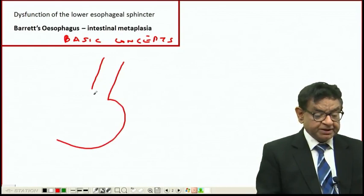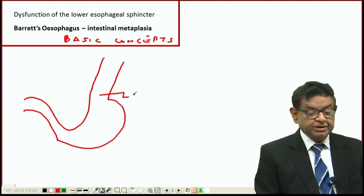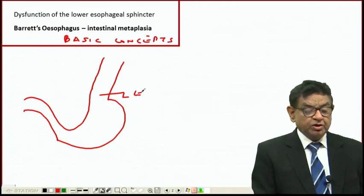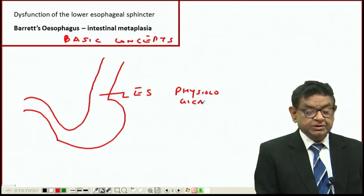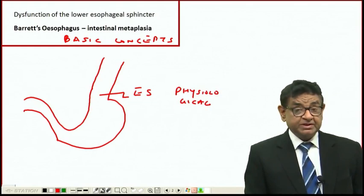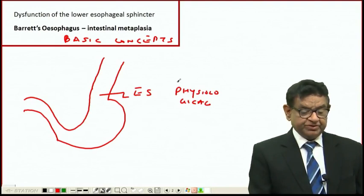This is the lower end of the esophagus with a sphincter called the lower esophageal sphincter. It is a physiological sphincter, meaning it normally remains closed but opens when a person swallows food. It is not an anatomical sphincter but a physiological one. This is point number one to remember.